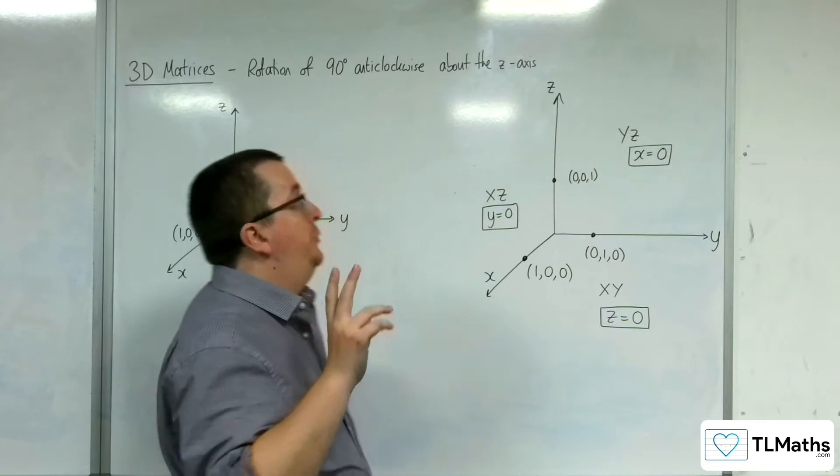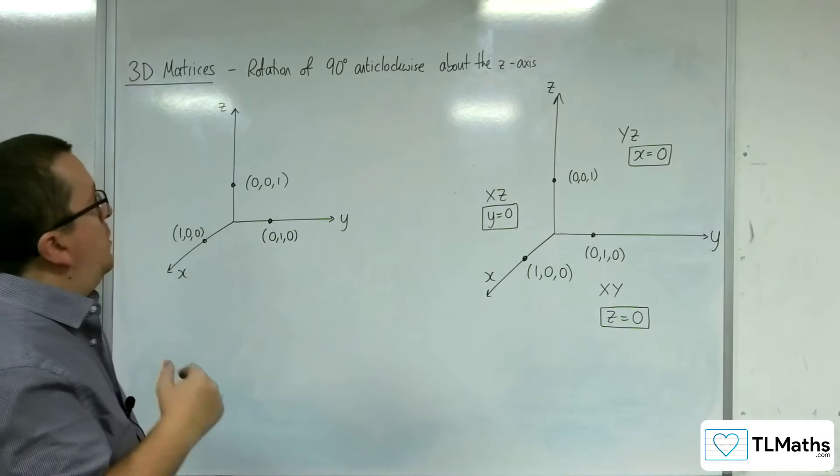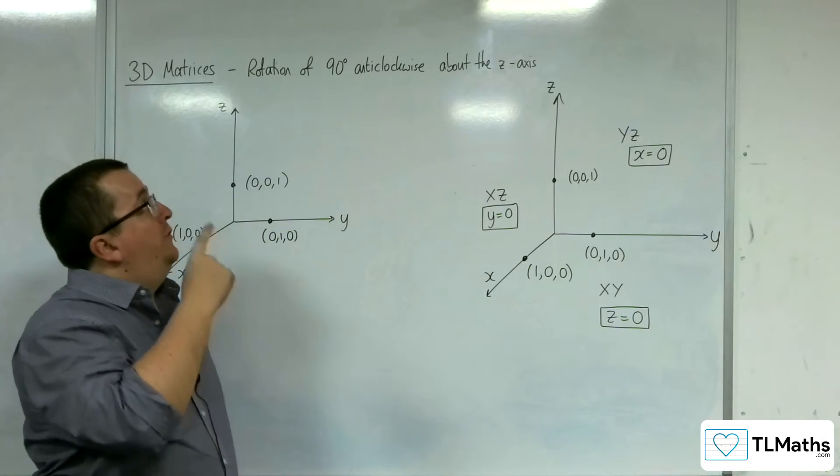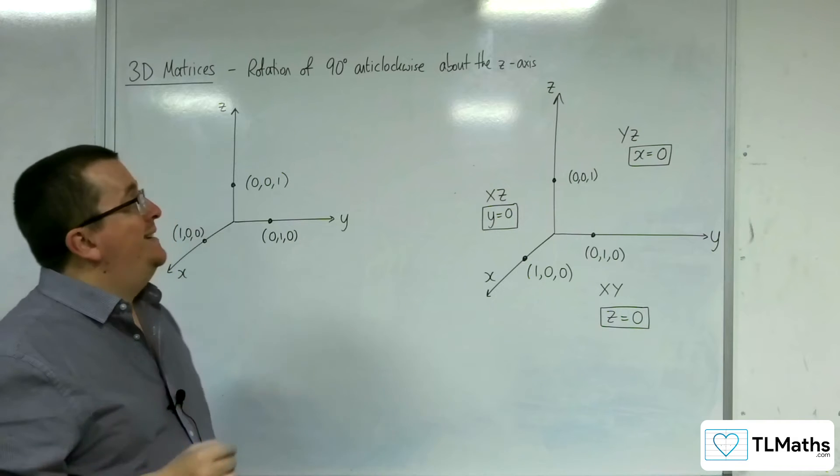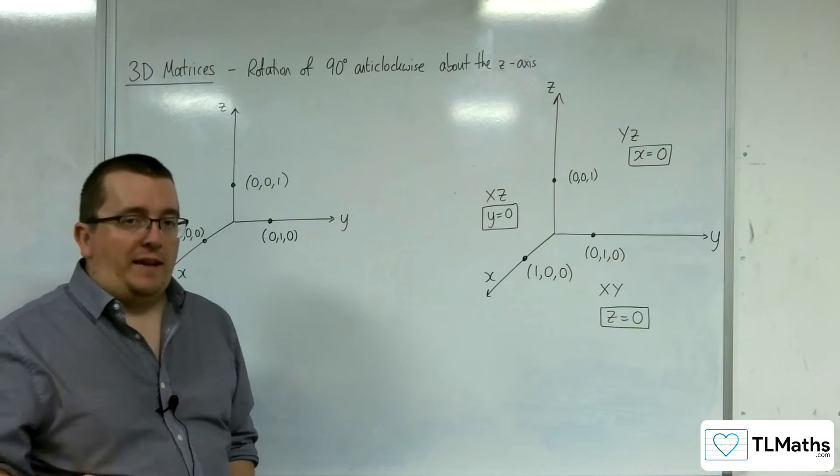In this video, we are going to derive the 3D rotation matrix that represents a rotation of 90 degrees anticlockwise about the z-axis.